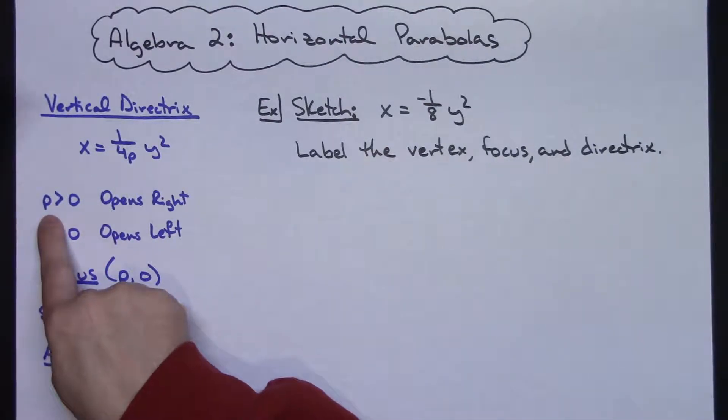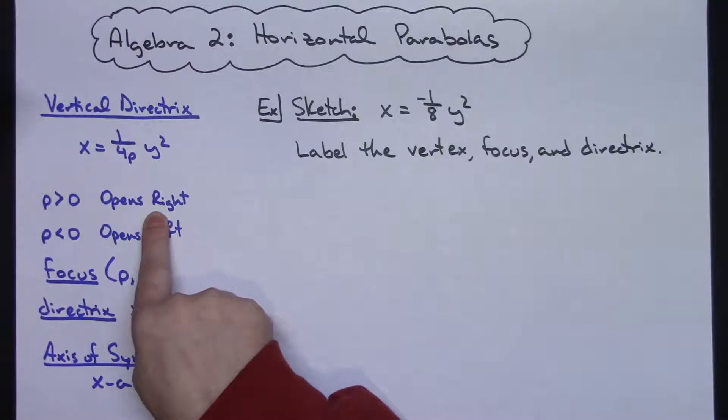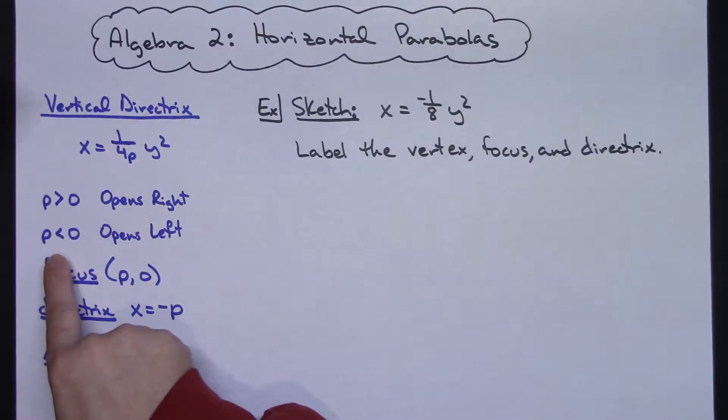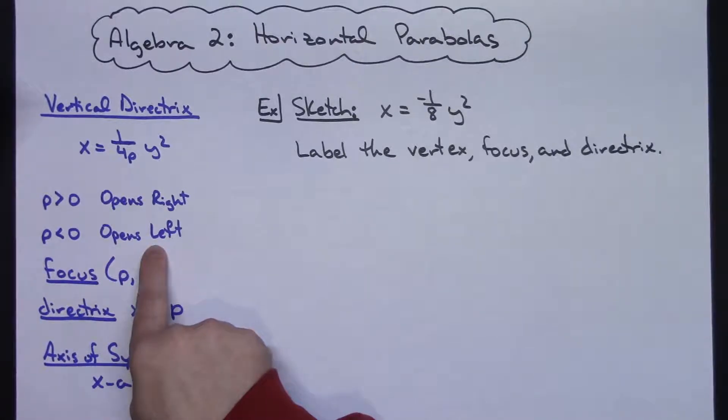We know that if our p is greater than zero our parabola will open to the right. We know that if our p is less than zero it's going to open to the left.